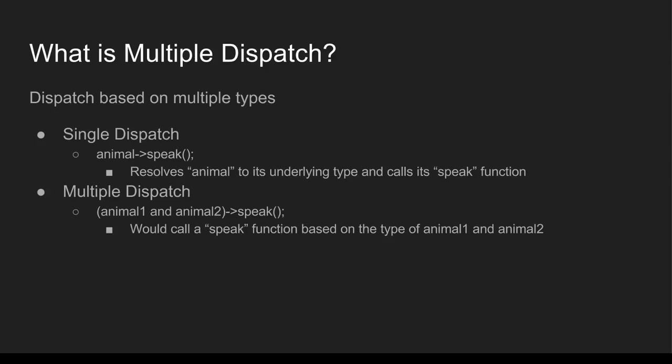But suppose that instead of just having a single type, we actually want to see how two animals interact together — if you put two animals into a cage, are they going to fight, are they going to be friendly? That's what we mean by 'multiple' in multiple dispatch. As shown on the slide, if we have two animals — say a dog and a cat — there may be fighting noises. Two cats together may produce a purring noise, and two dogs together may produce playful noises.